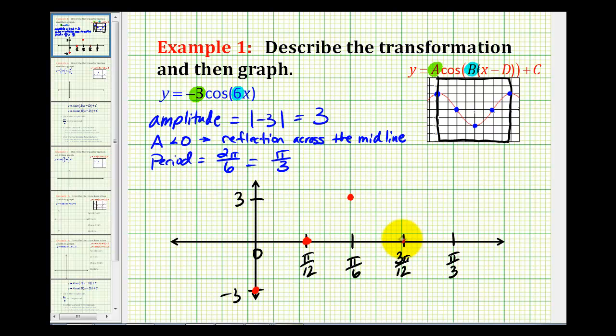The next fourth is at the midline, and the next fourth will be at a minimum of negative three because of the reflection. And now we have all the points we need to make a nice sketch of this graph over the period pi over three radians.